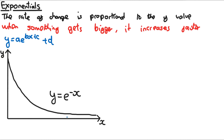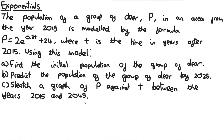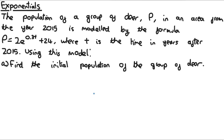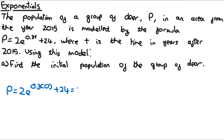Here's a quick example on exponential modelling. For part A, we need to find the initial population of the group of deer. Whenever it says 'initial', it means the population at the start of the model — in 2015. Since T is the time in years after 2015, at 2015 T equals 0. So the initial population is 2e to the power of (0.3 × 0) + 24, which equals 2 times e to the power of 0 plus 24, giving 2 times 1 plus 24, which equals 26 deer.